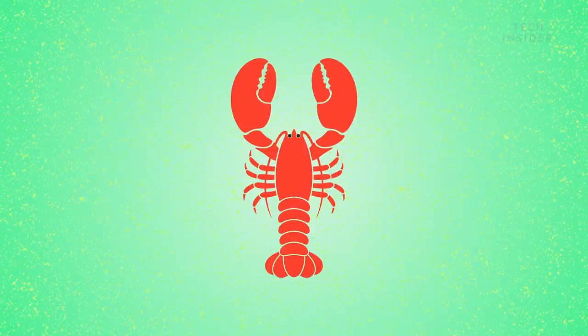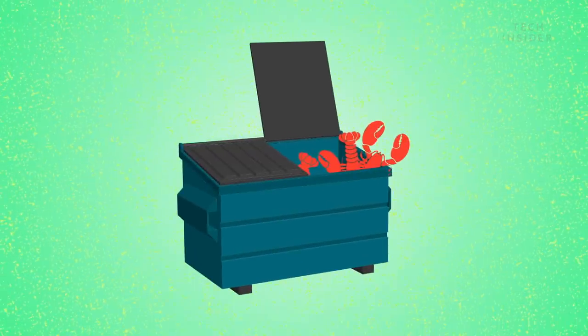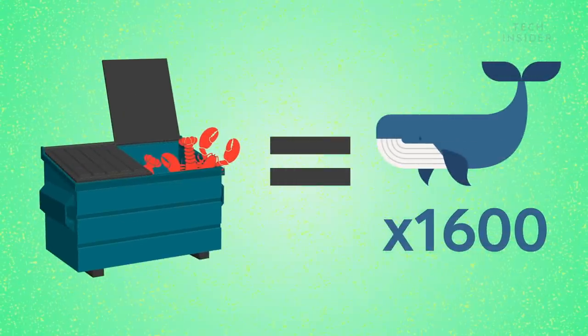Over 250,000 tonnes of crustacean waste are produced every year in the EU alone. That waste is equal to about 1,600 blue whales.